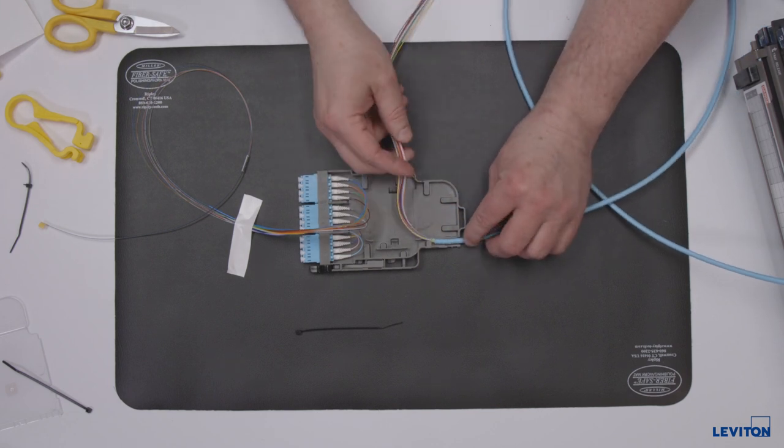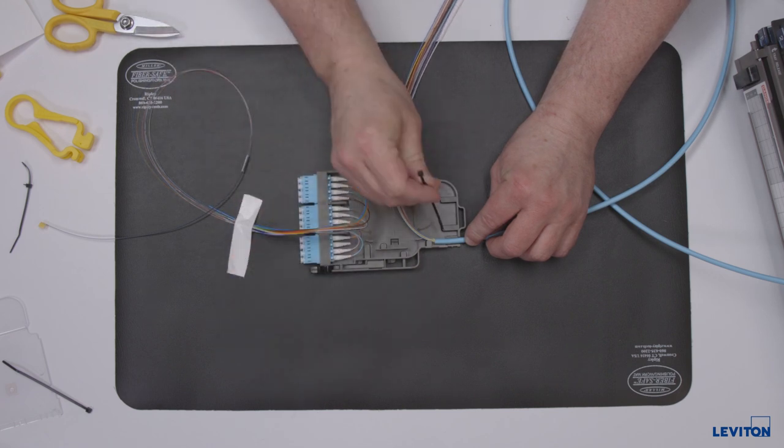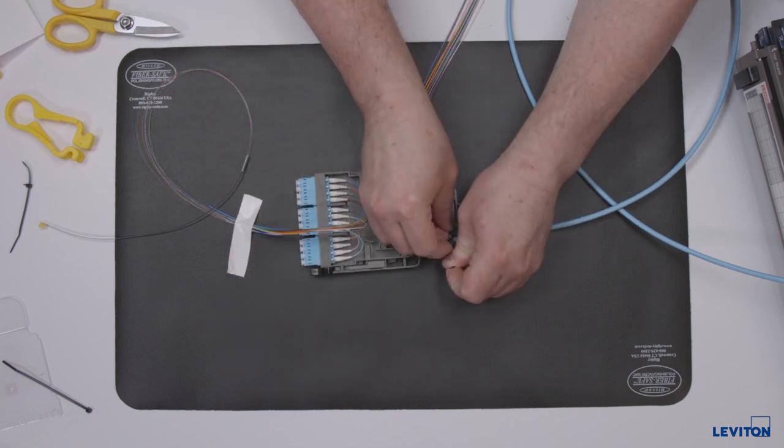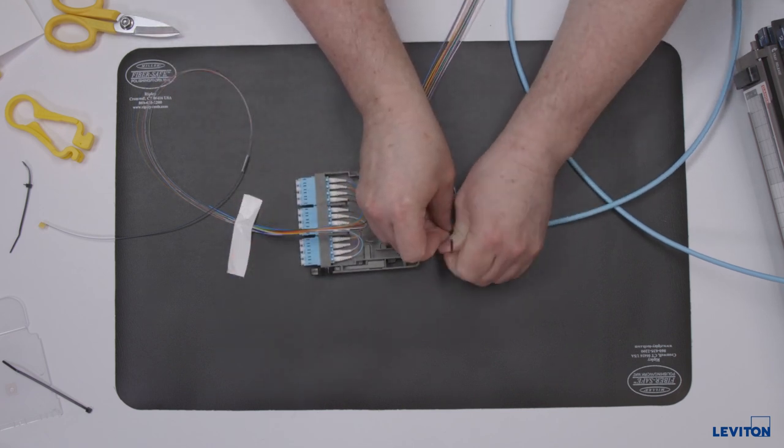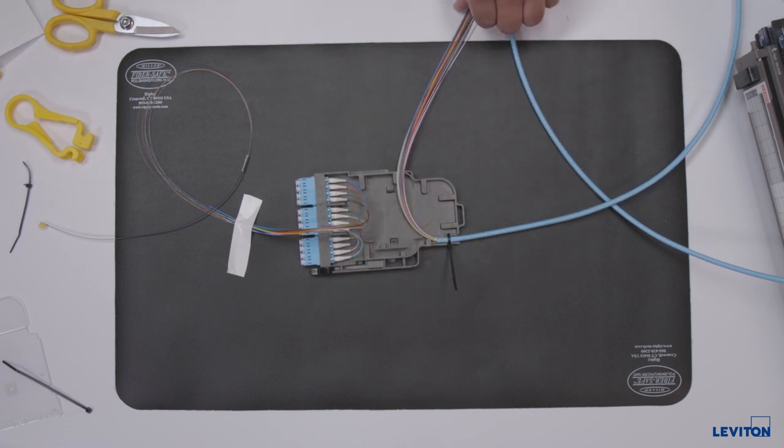Feed incoming cables through the rear opening and secure through the tie wrap slots and over the cable jacket with one of the provided nylon cable ties. This tie wrap will be removed after pre-routing and marking of fibers prior to termination.